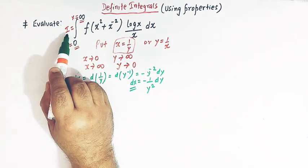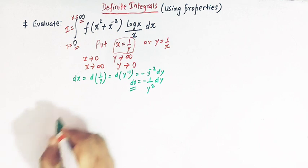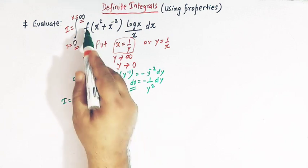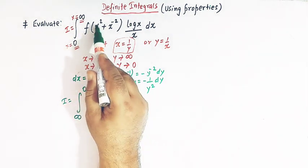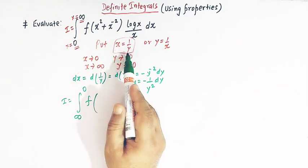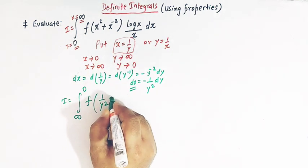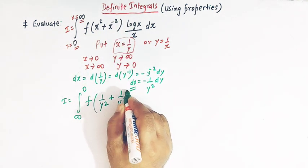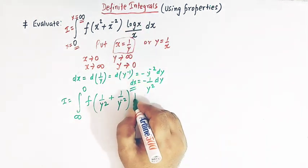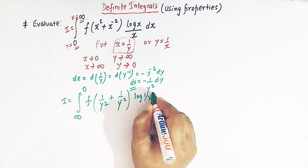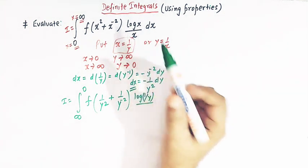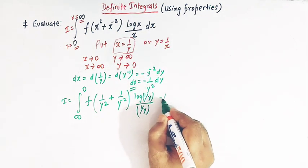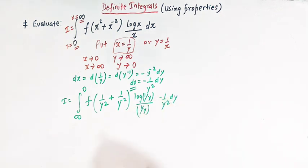Now let us write this integral in terms of y. So I is equal to the integral from infinity to 0, and here we have f of: x squared becomes 1 over y squared, then x raised to minus 2 becomes 1 over y raised to minus 2, and log of x becomes log of 1 over y, and x becomes 1 over y, and dx is replaced by minus 1 over y squared dy.